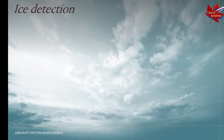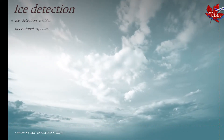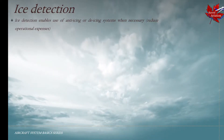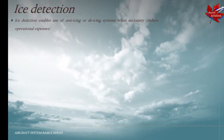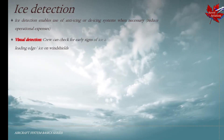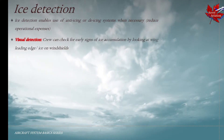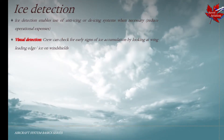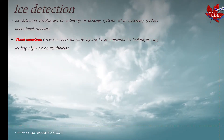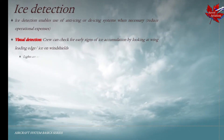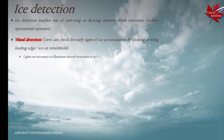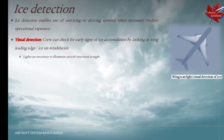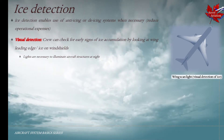Here we have a depiction of ground de-icing operations and a depiction of rubber de-icing boots as well. Ice detection is an important feature in that it allows the use of anti-icing and de-icing systems strictly when necessary, reducing operation expenses. Crew can check for early signs of ice accumulation by looking at wing leading edges or ice on windshields, which is called visual detection. Lights are necessary to illuminate the aircraft structures at night, and the wing scan light helps to do this.